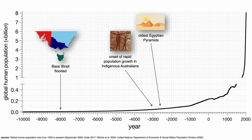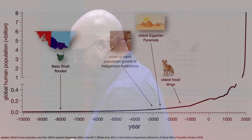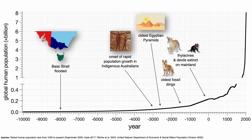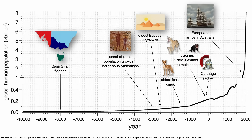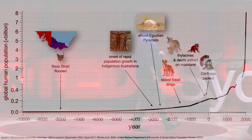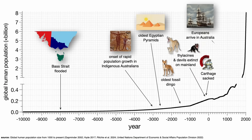The oldest fossil dingo dates to about 3,500 years ago, but they were probably here much longer than that. Thylacines and devils went extinct about the same time on the mainland. Then very shortly after, the Romans sacked Carthage in 146 BCE. Europeans arrived permanently in 1788, and Indigenous Australians were included for the first time in the national census in 1971.